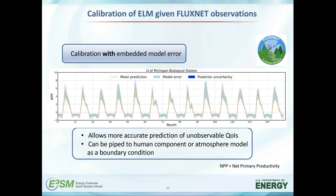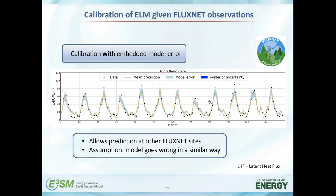What this also allows — the embedded model error approach, unlike conventional external correction — is prediction of unobservable quantities like net primary productivity when there is no data for it. We can predict now with model error augmented in the prediction. With external correction to latent heat flux data, we wouldn't be able to extrapolate those predictions to NPP. With embedded correction, we are able to do this extrapolation in a meaningful way. A different type of extrapolation is when you calibrate at one site — a University of Michigan site — and try to predict quantities of interest at another site. The assumption is that the model goes wrong in a similar way across two sites, and embedding model structural error inside the model allows you to do this in a meaningful and consistent way.